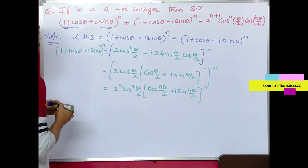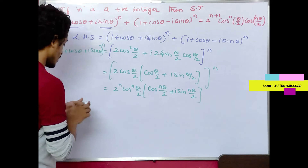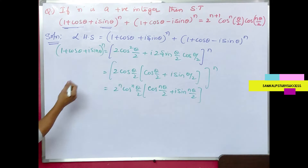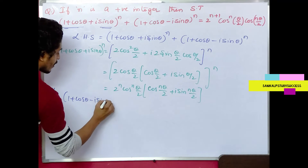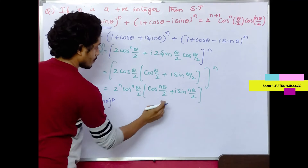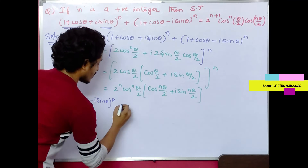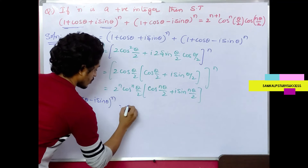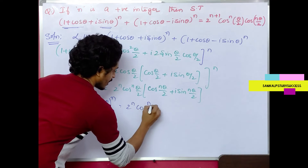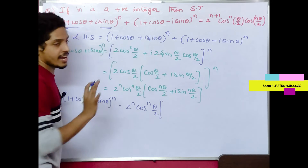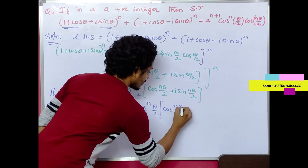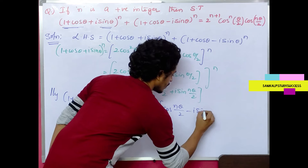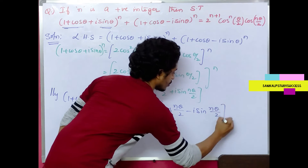So (1 + cosθ + i sinθ)^n becomes 2^n · cos^n(θ/2) · (cos(nθ/2) + i sin(nθ/2)). Similarly, (1 + cosθ - i sinθ)^n gives 2^n · cos^n(θ/2) · (cos(nθ/2) - i sin(nθ/2)).